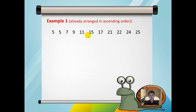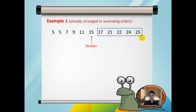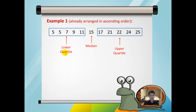Discrete data means that the numbers are not grouped together. The middle number here is 15 and we call this the median. Excluding this number, the middle of the upper set of numbers is 22, and hence we call this the upper quartile. The middle of the lower set of numbers is 7, and we call this the lower quartile.